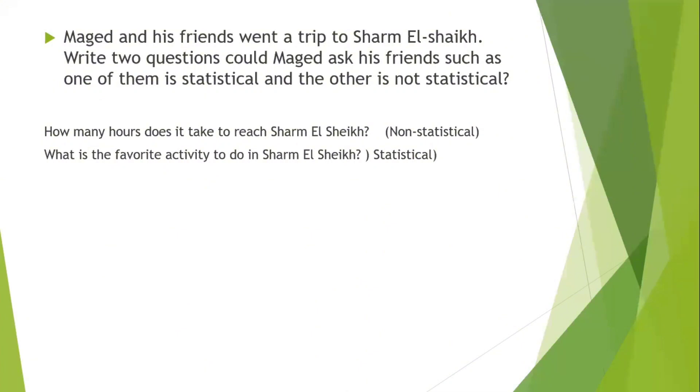Magid and his friends went on a trip to Sharm el-Sheikh. Write two questions Magid could ask his friends such that one of them is statistical and another one is not statistical. If he asks his friends, how many hours does it take to reach Sharm el-Sheikh? Of course it's not statistical. Why? Because he's just asking about the distance and the time they took to travel to Sharm el-Sheikh. What is the favorite activity to do in Sharm el-Sheikh? So everyone will say his favorite activity. Someone says diving, someone says snorkeling, someone says walking, someone says swimming and so on. So everyone has his favorite activity. So this is a statistical question.